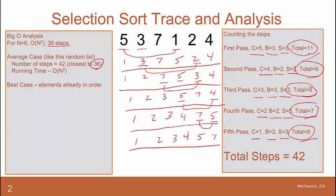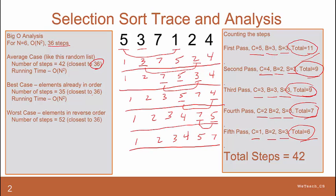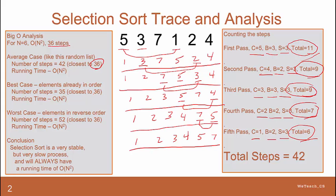If we looked at the best case of this scenario, where the elements would already be in order, the number of steps it would take would be 35, which is still close to 36. And it would still be considered a running time of O of n squared. The worst case would be when the elements are in reverse order. The number of steps there would be 52, because you're reassigning the best value every single time you compare. But that's still a running time of O of n squared. So the conclusion for the selection sort is that it's a very stable, but very slow process, and will always have a running time of O of n squared.